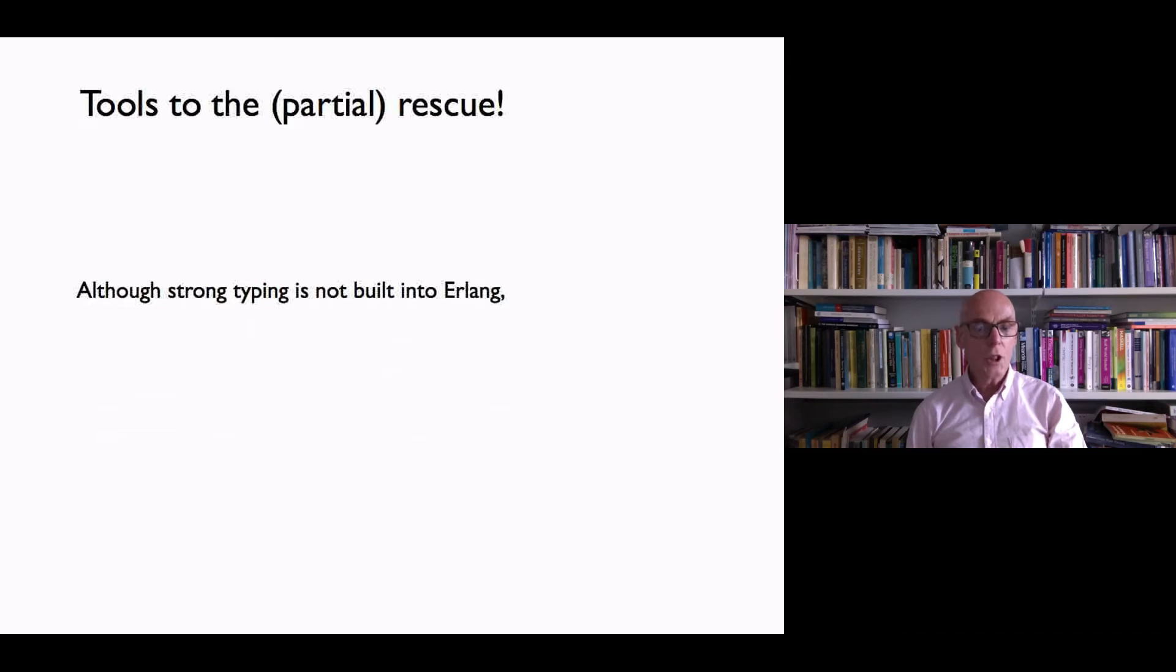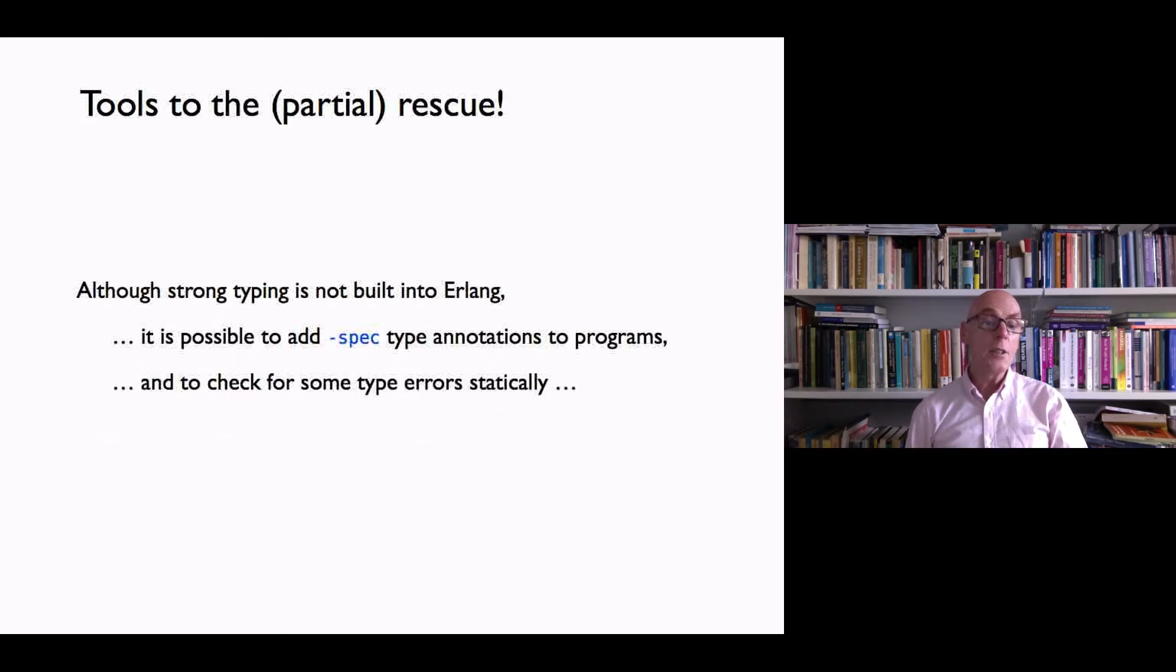So what can we do to try and help? Well the answer is that we can use some tools to come to the rescue, or at least partially. Erlang isn't strongly typed, and we'll say a bit about this when we get to an example of it later on. So although it isn't built in, it's possible to add type annotations to programs, specifications.